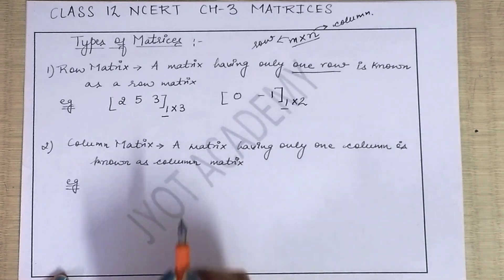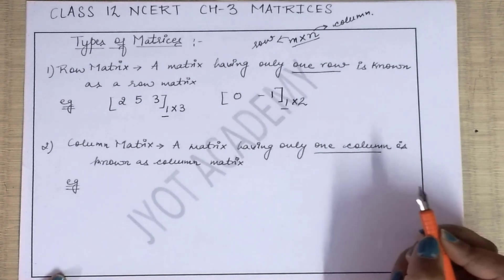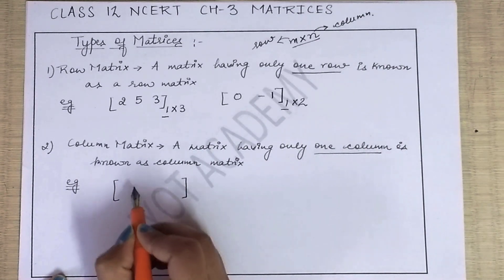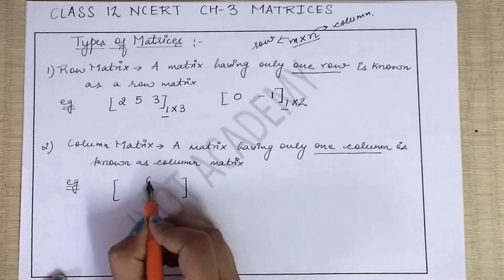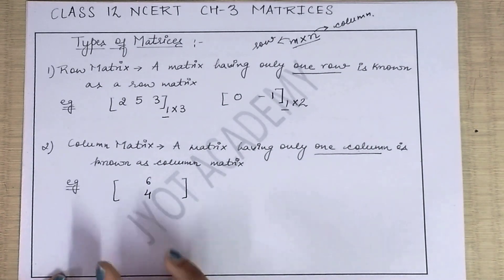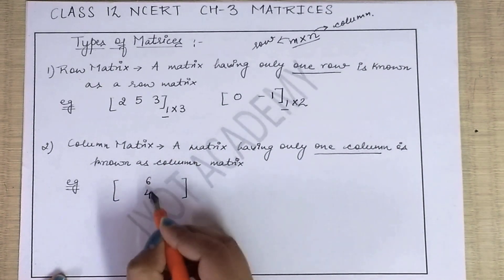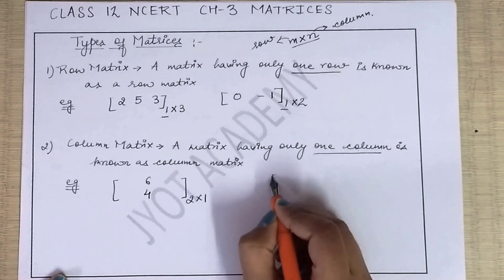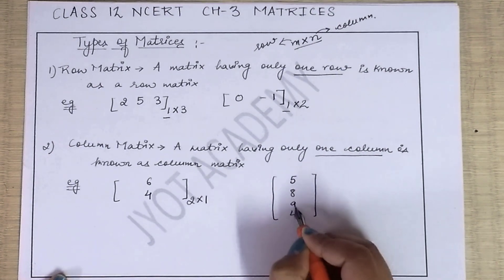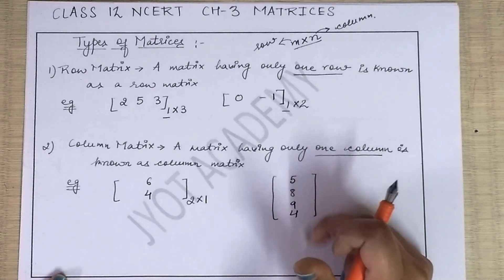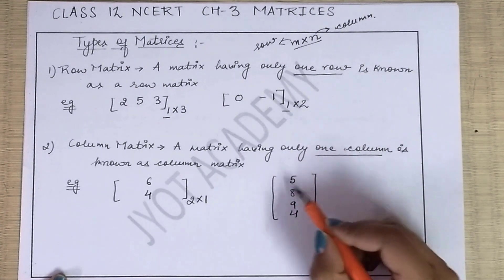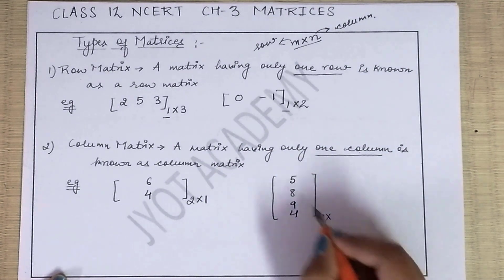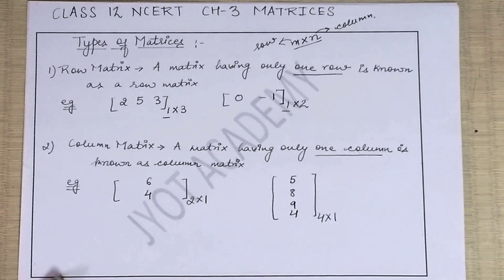A matrix having only one column is known as a column matrix. Yahaan pere column 1 hoga, aapki chahe row jitni marzi ho sakti hai. For example, [6, 4] — yahaan two rows hain aur one column hai. Another example: [5, 8, 9, 4] — ismein four rows hain and only one column position. Yaise bolenge hum column matrix.